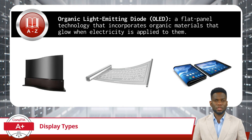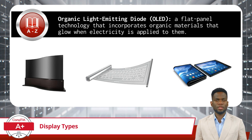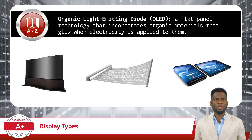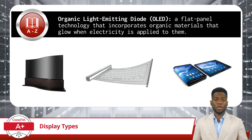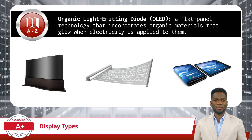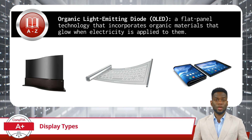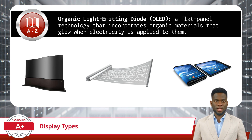Next, we have OLED. This acronym stands for Organic Light Emitting Diode and is a flat-panel technology that incorporates organic materials that glow when electricity is applied to them. Imagine a bunch of tiny colored lights that can turn on and off on their own. Each little light is a pixel, and they can create pictures without needing a backlight, which is something LCD screens require. Because these tiny lights make their own color, everything looks super vibrant, and the blacks in the picture are really deep and dark. It's like each pixel is a tiny color-changing firefly, working together to create a bright and lively image.